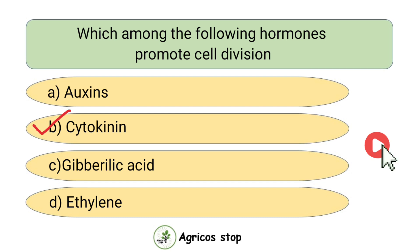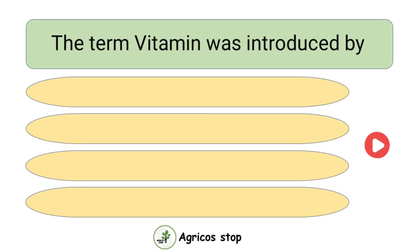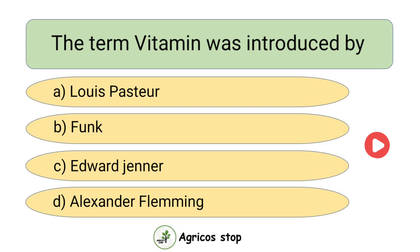Which among the following hormones promotes cell division? Options are Auxins, Cytokinins, Gibberellic Acid, and Ethylene. The answer is Cytokinins. Cytokinins promote cell division.